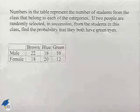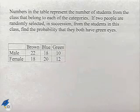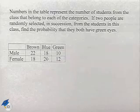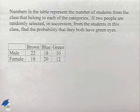Now let's use a table in order to find probabilities. Numbers in the table represent the number of students from the class that belong to each of the categories. If two people are randomly selected in succession from the students in this class, find the probability that they both have green eyes.